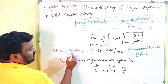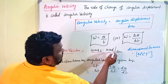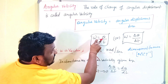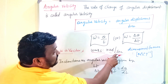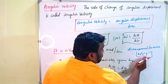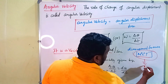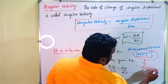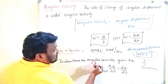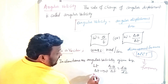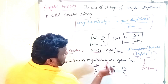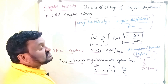Angular velocity is a vector quantity. Its unit is radians per second, since theta is in radians and t is in seconds. The dimension formula is M⁰L⁰T⁻¹, which is the same as frequency. The instantaneous angular velocity is given by the limit as delta t tends to zero of delta theta by delta t, which equals d theta by dt.